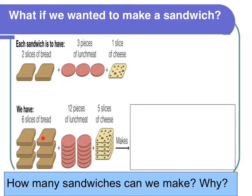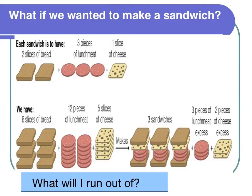With the bread we can make three sandwiches. If each sandwich has three pieces of lunch meat and we have 12, then 12 divided by 3 is 4 sandwiches. And if every sandwich has one slice of cheese, that's five sandwiches. So the bread makes three, the lunch meat makes four, and the cheese makes five.